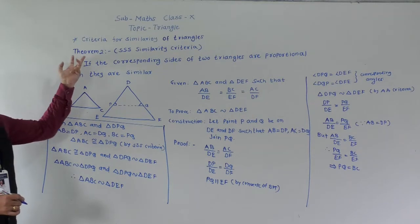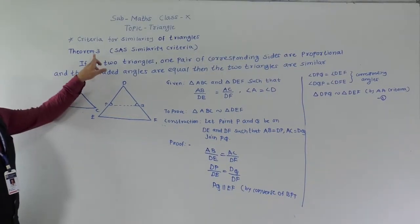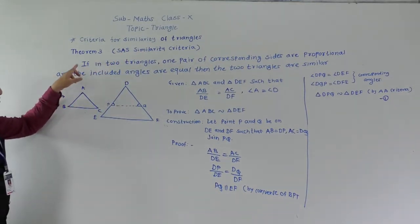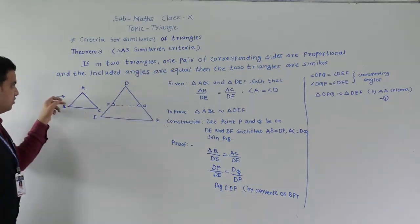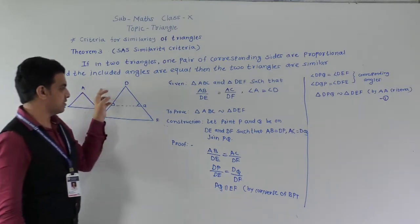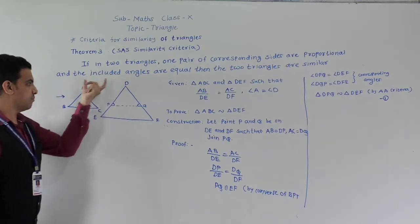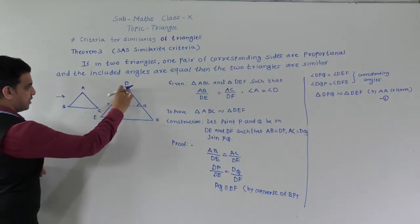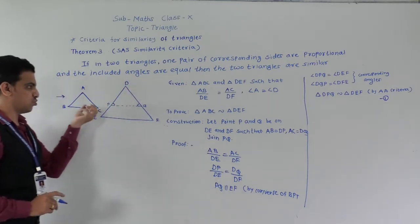The third similarity criteria is SAS Similarity Criteria. If in two triangles one pair of corresponding sides are proportional — that is AB by DE equals AC by DF — and the included angle A (between AB and AC) is equal to the included angle D (between DE and DF), then we have to show that these two triangles are similar.